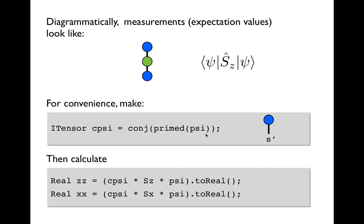So for convenience let's go ahead and prepare the bra version of psi, which anticipating our operator convention needs to have a primed s index so we call primed on psi. So just as primed works on an index and adds a prime, primed acting on an itensor primes all the indices of that itensor and returns a copy of the new itensor. And then we also call conj because a bra's elements should be the complex conjugate of the corresponding ket. And we store the result, call it cpsi for conjugate psi.